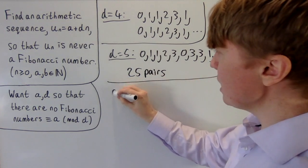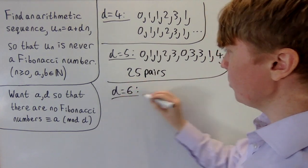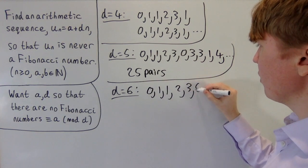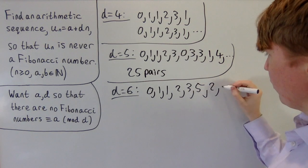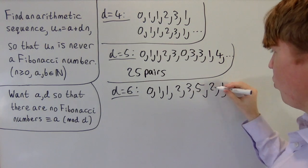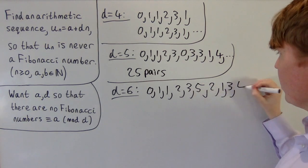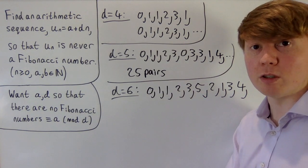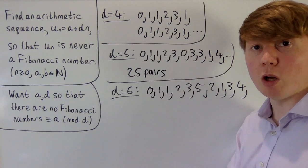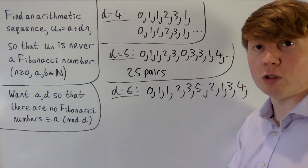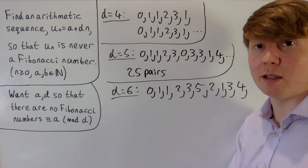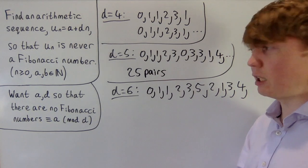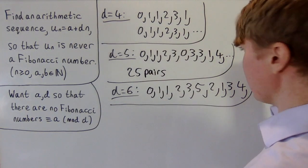For d equals 6, Fibonacci numbers modulo 6 give 0, 1, 1, 2, 3, 5, 2, then 5 plus 2 is 1, 2 plus 1 is 3, 1 plus 3 is 4. Even before the sequence repeats, all of 0, 1, 2, 3, 4, and 5 are represented. So d equals 6 won't work either.